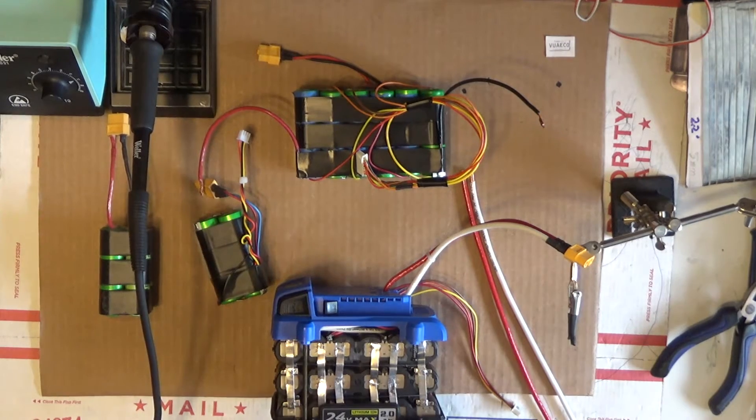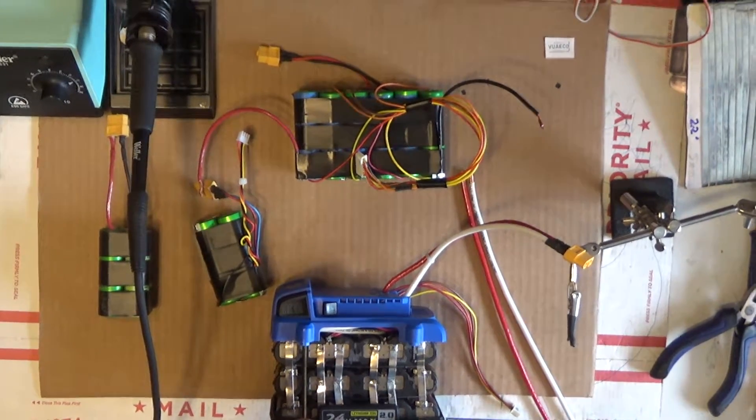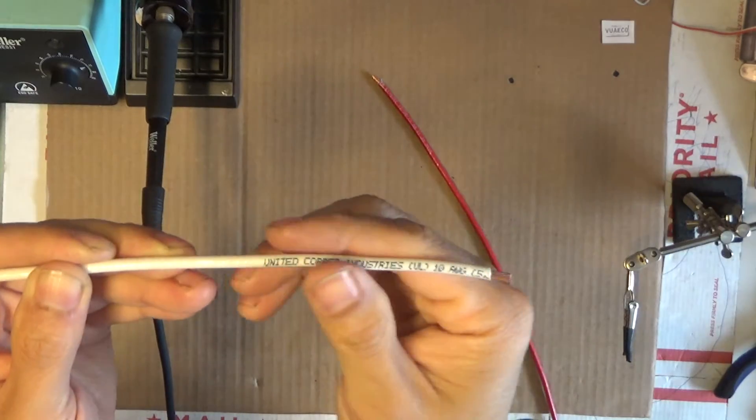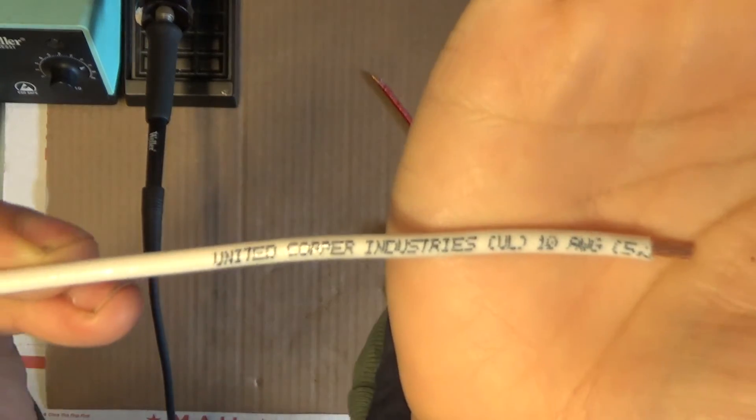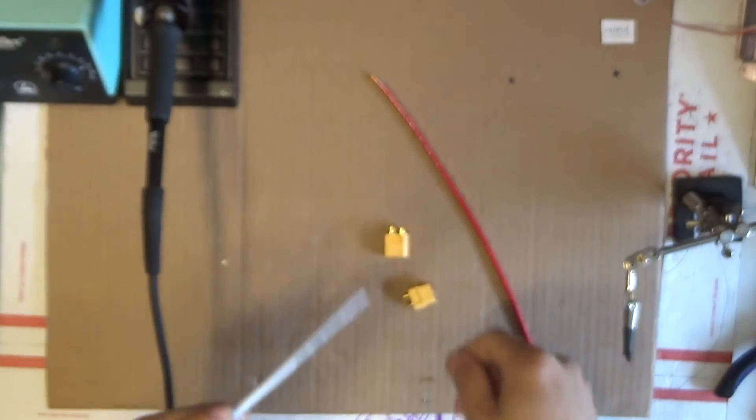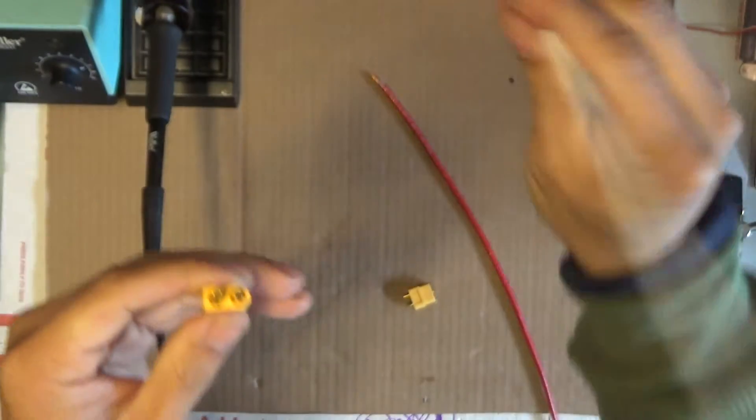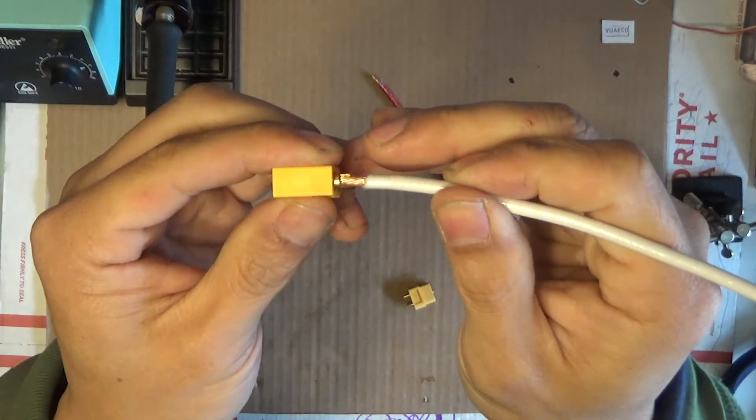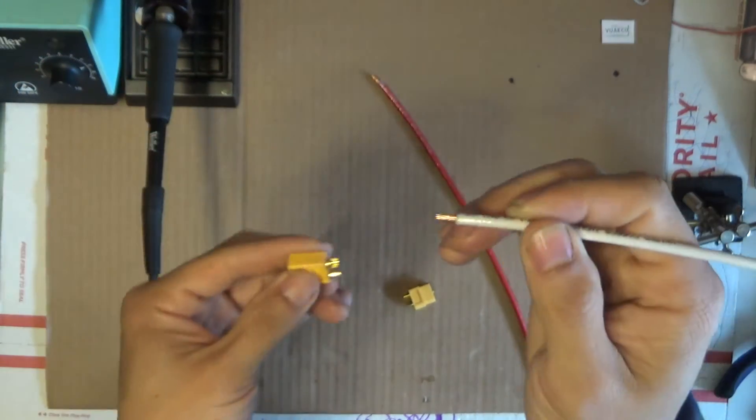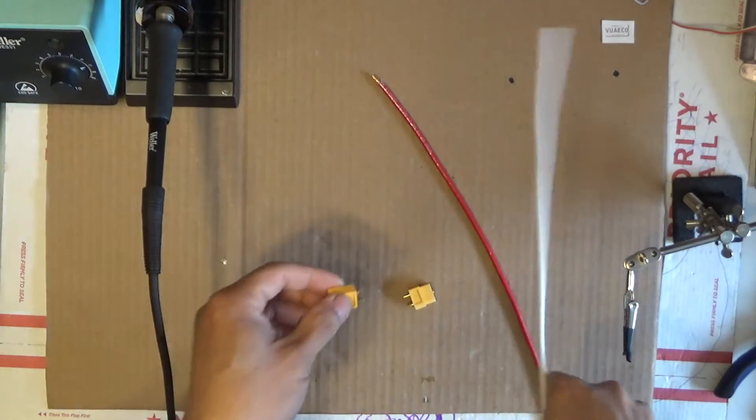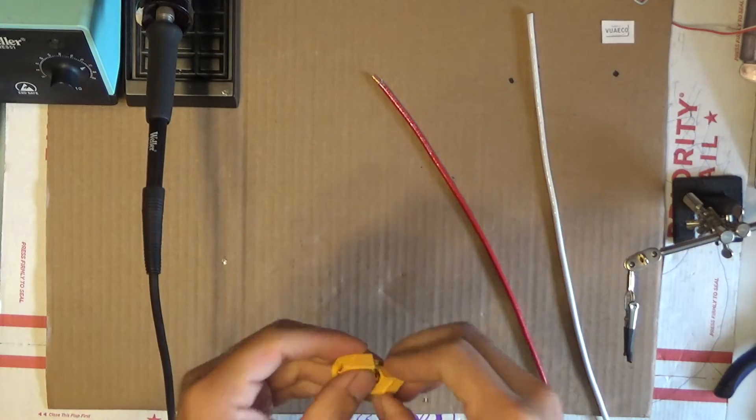So let's get started. For this project, I'm going to use size 10 wire. This is the biggest wire you can fit onto the connector, can't go any bigger, and it's really tight. That way you can get the maximum amount of current going through the connector and wire.